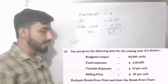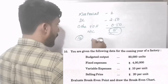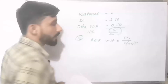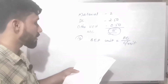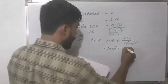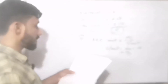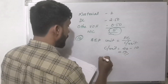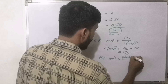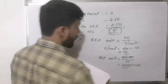Break-even point in units is calculated as Fixed Cost divided by Contribution per unit. Contribution per unit equals Selling Price minus Variable Cost, which is Rs. 20 minus Rs. 10, giving a contribution per unit of Rs. 10. BEP in units equals Rs. 4,00,000 divided by Rs. 10, which equals 40,000 units.